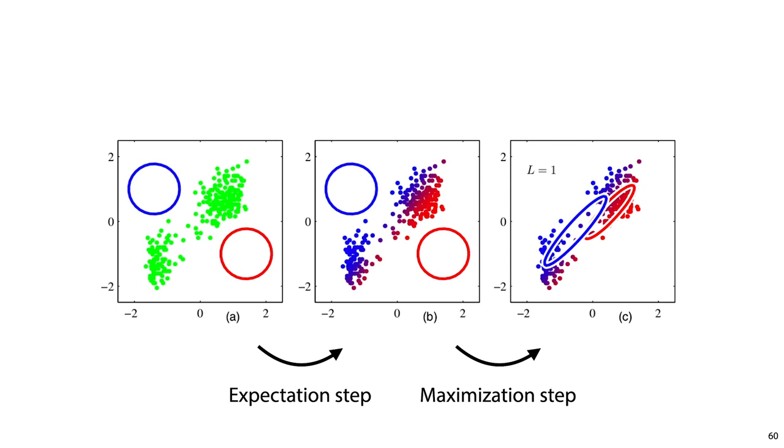So this, in broad strokes, are the two steps of the expectation-maximization algorithm. In the expectation step, we assign soft responsibilities to each point in our dataset. And in the maximization step, we fit new components onto our weighted dataset.